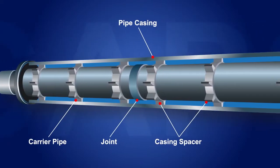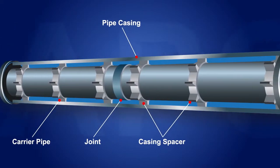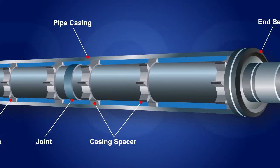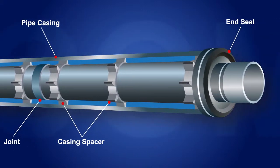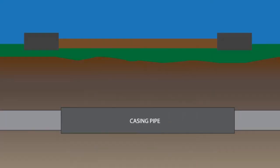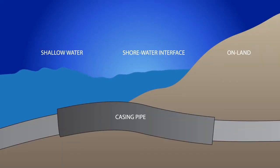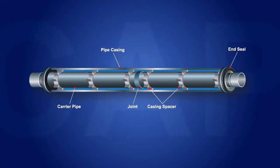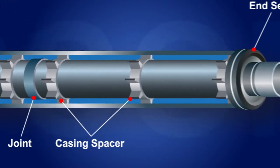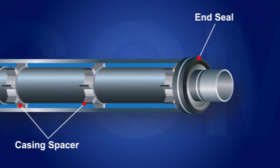Cased pipelines are sections where the oil and gas carrying pipe is enclosed within a protective casing pipe for additional structural strength when the pipeline passes beneath a highway, railroad, or river. Because they are often sealed or filled with a separating medium such as wax, cased pipeline segments are difficult to inspect visually or mechanically.